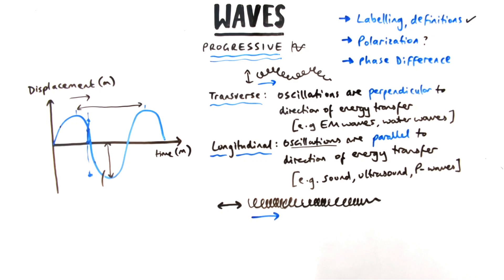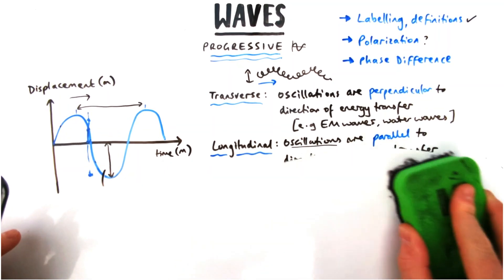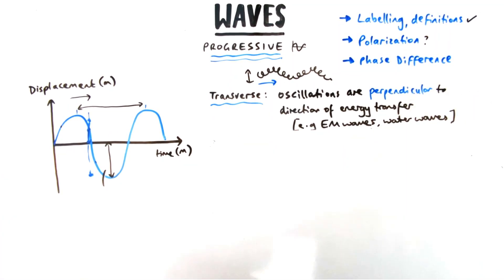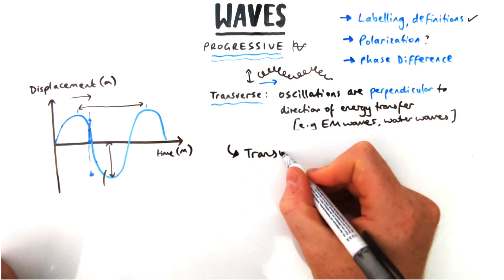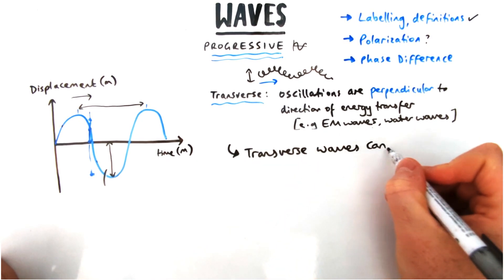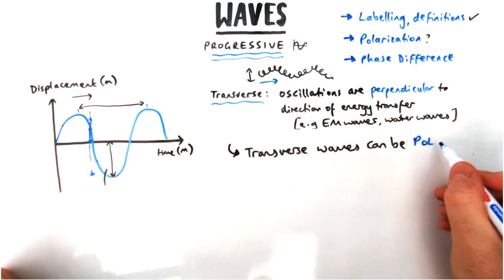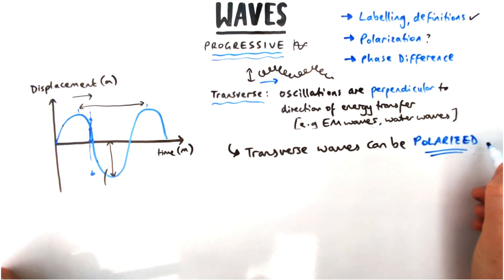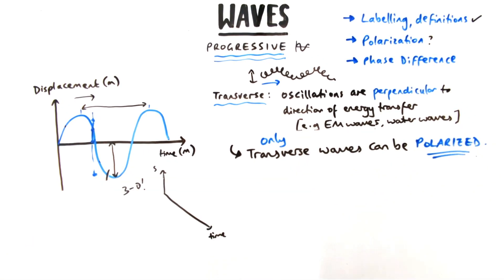As I mentioned earlier, we're only going to talk about transverse waves when we talk about polarization. That's because transverse waves can be polarized and they're the only type of waves that can be polarized. You cannot do it with longitudinal waves and I'll explain why.